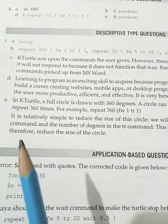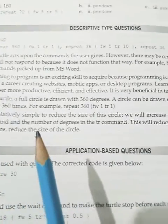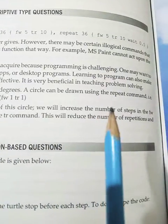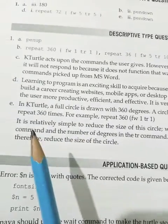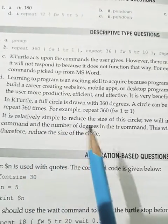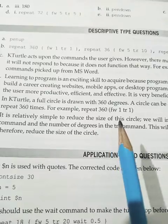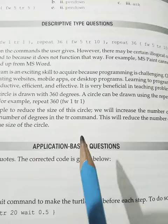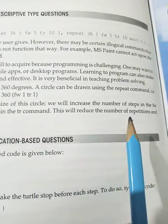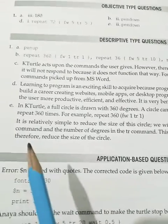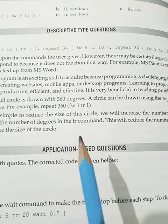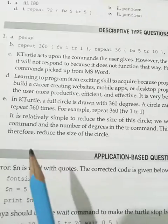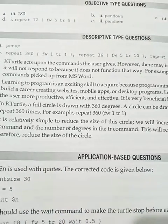Answer E is: in KTurtle a full circle is drawn with 360 degrees. A circle can be drawn using the repeat command, for example repeat 360 forward 1 TR 1. It is relatively simple to reduce the size of the circle. We will increase the number of steps in the FW command and the number of degrees in the TR command. This will reduce the number of repetitions and therefore reduce the size of the circle.